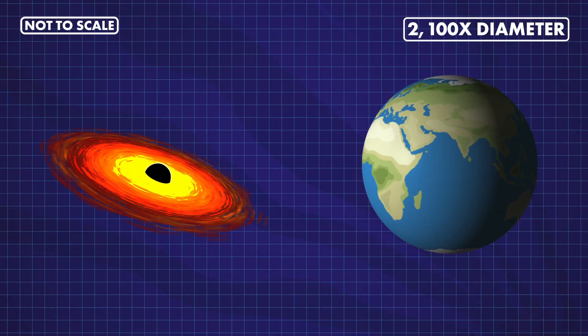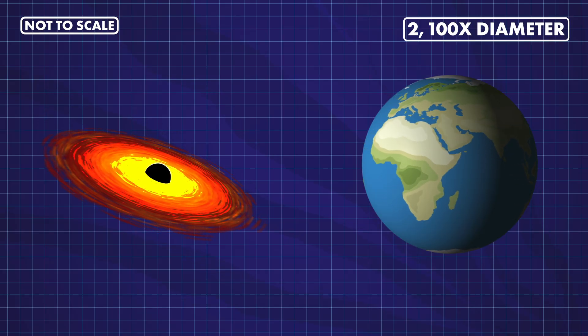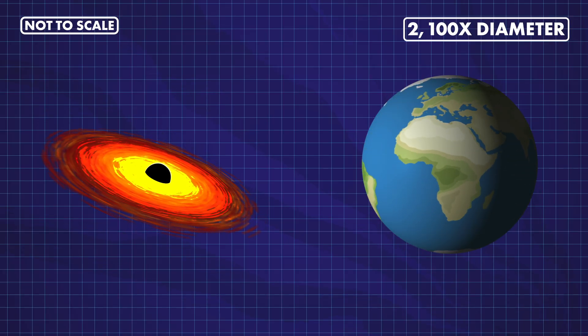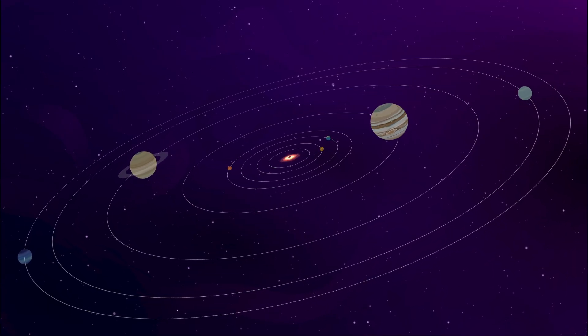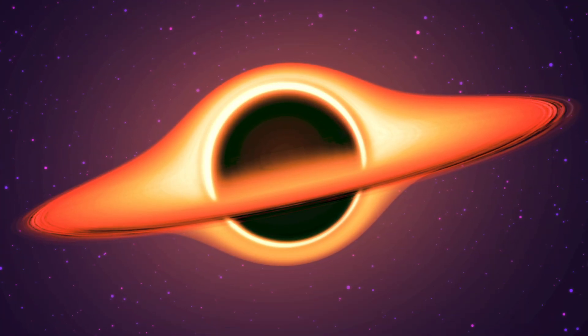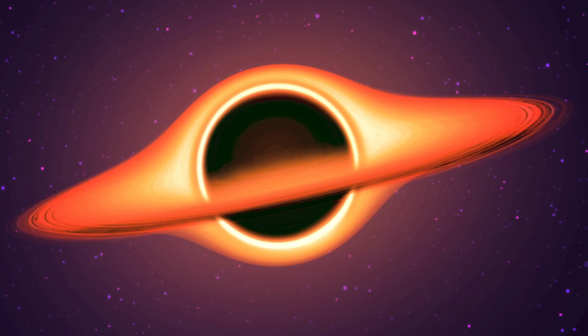That's over 2,100 times smaller than Earth, despite being 330,000 times more massive. Such a small black hole would pose little direct threat to our solar system. Despite popular myths, black holes are not cosmic vacuum cleaners, constantly sucking in matter from across the universe.